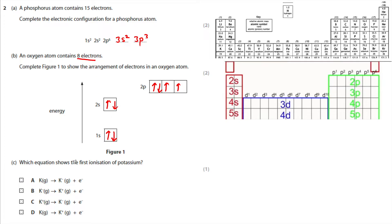Which equation shows the first ionization of potassium? The first ionization energy is the energy needed to remove the first electron from a mole of potassium atoms in a gaseous state. We have to show removing an electron from potassium in the gaseous state, which means potassium will form a plus-one ion — it starts as a neutral atom then becomes a positive ion and releases an electron, so the answer is D.